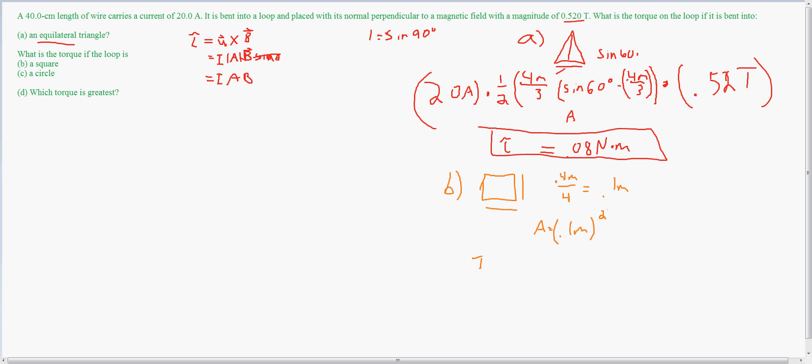So we have I times A times magnetic field, which is equal to the torque at sine of 90 degrees. So we have 0.1 meters squared times 20 amps times 0.52 tesla, which is equal to a torque of 0.104 newton meters. This is the answer to B.